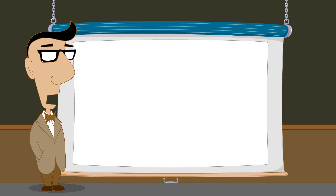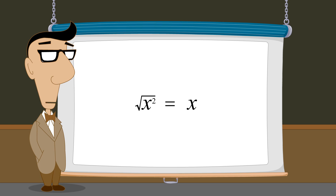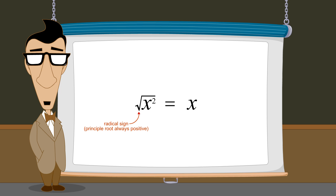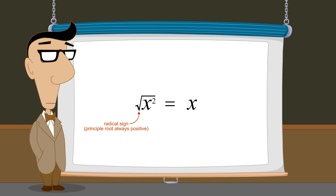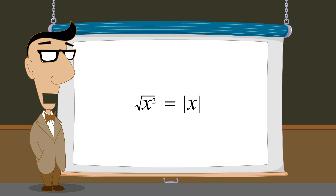Sometimes, the roots of expressions involving variables can be simplified. As a simple example, let's say the expression under the radical sign is x squared. The square root of x squared is obviously x. But remember that the radical sign implies the principal square root, which is always positive, and the value of the variable can be positive or negative. Therefore, when bringing a variable out from under a square root sign, we must force the result to be positive by writing the absolute value of the variable. This is true for square roots, fourth roots, or any even root.